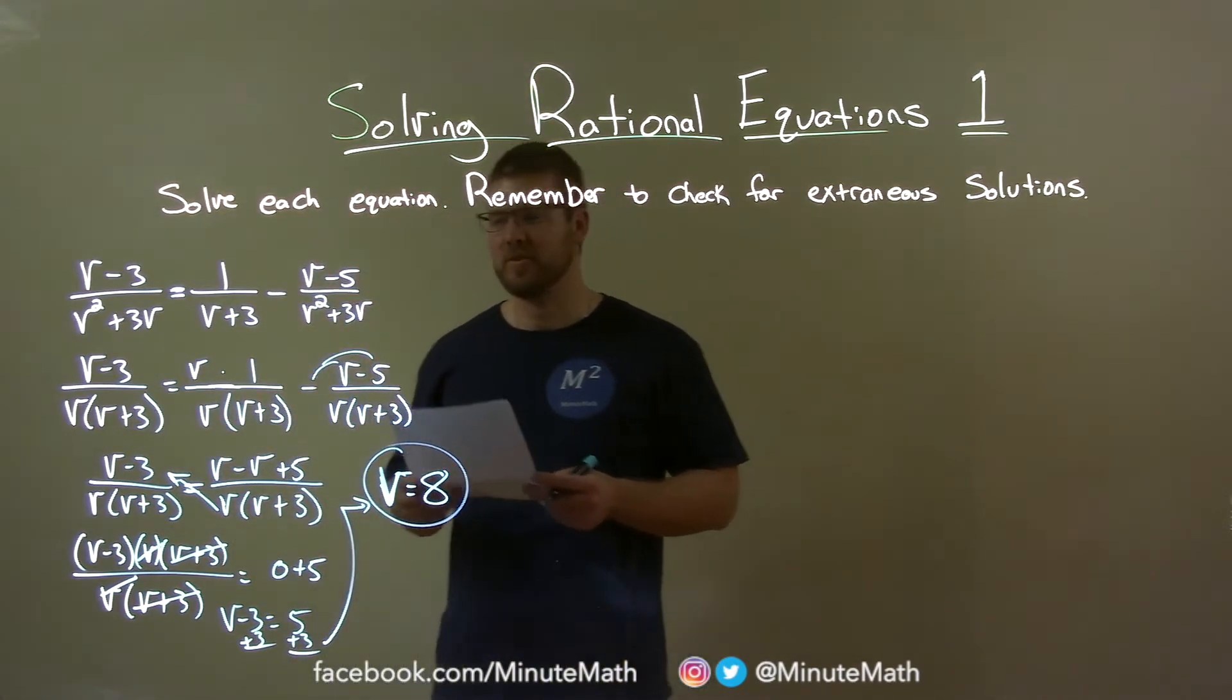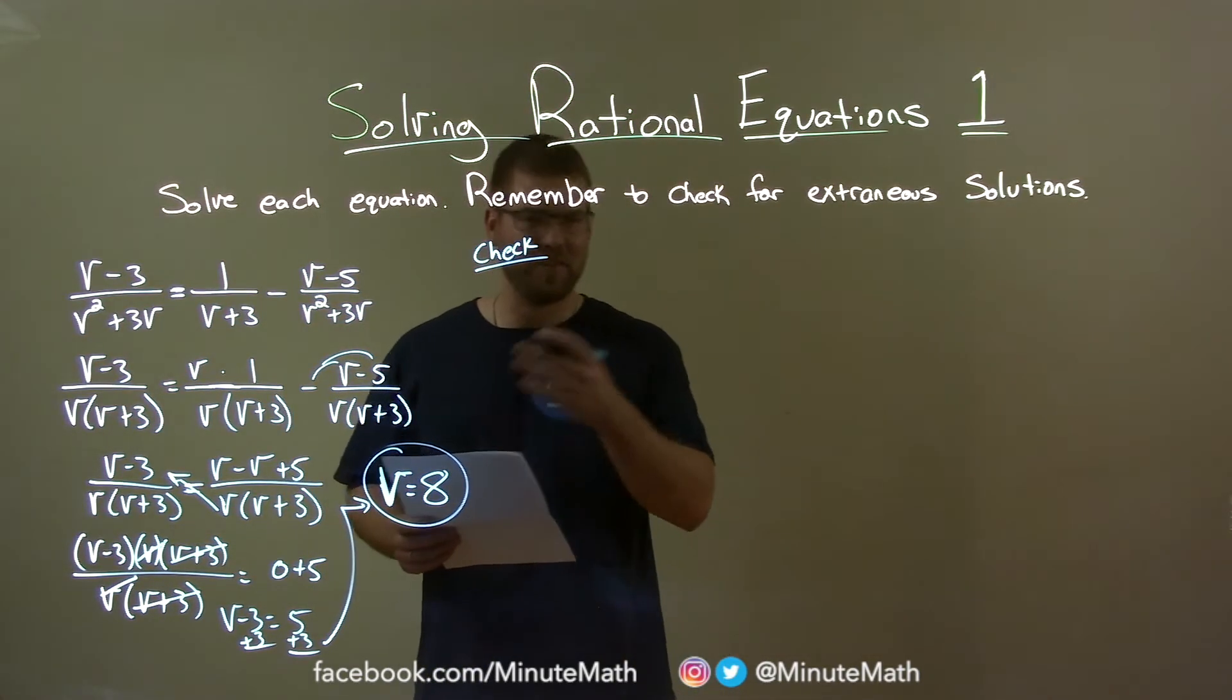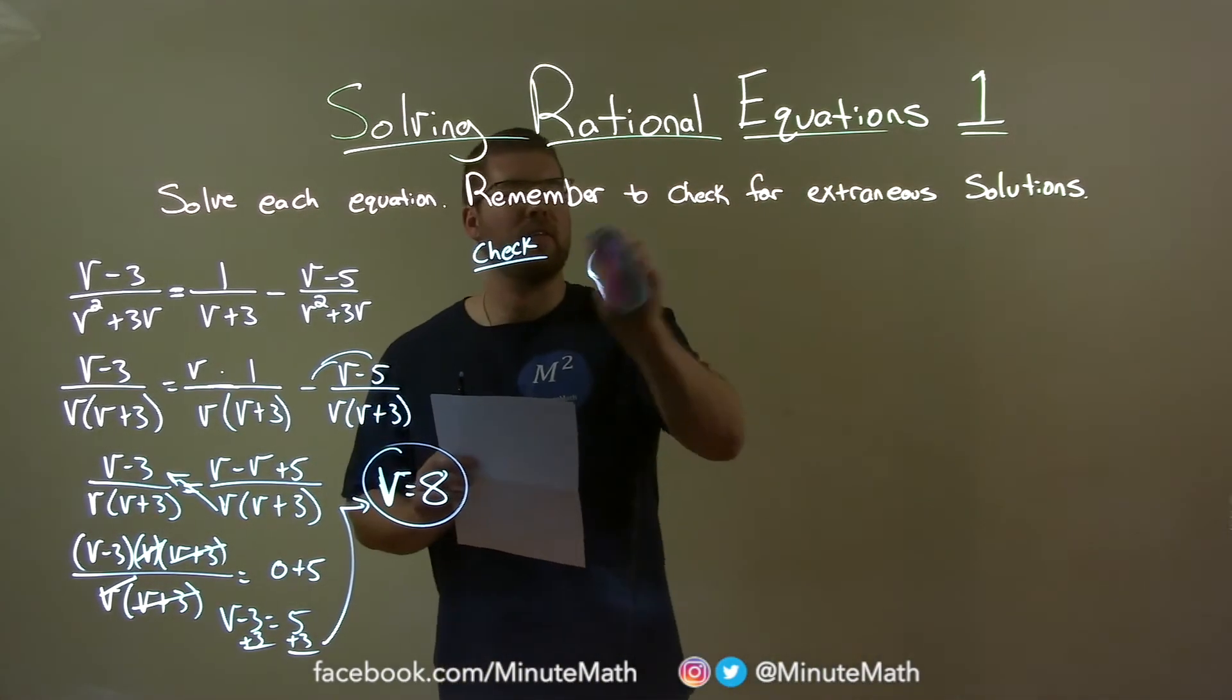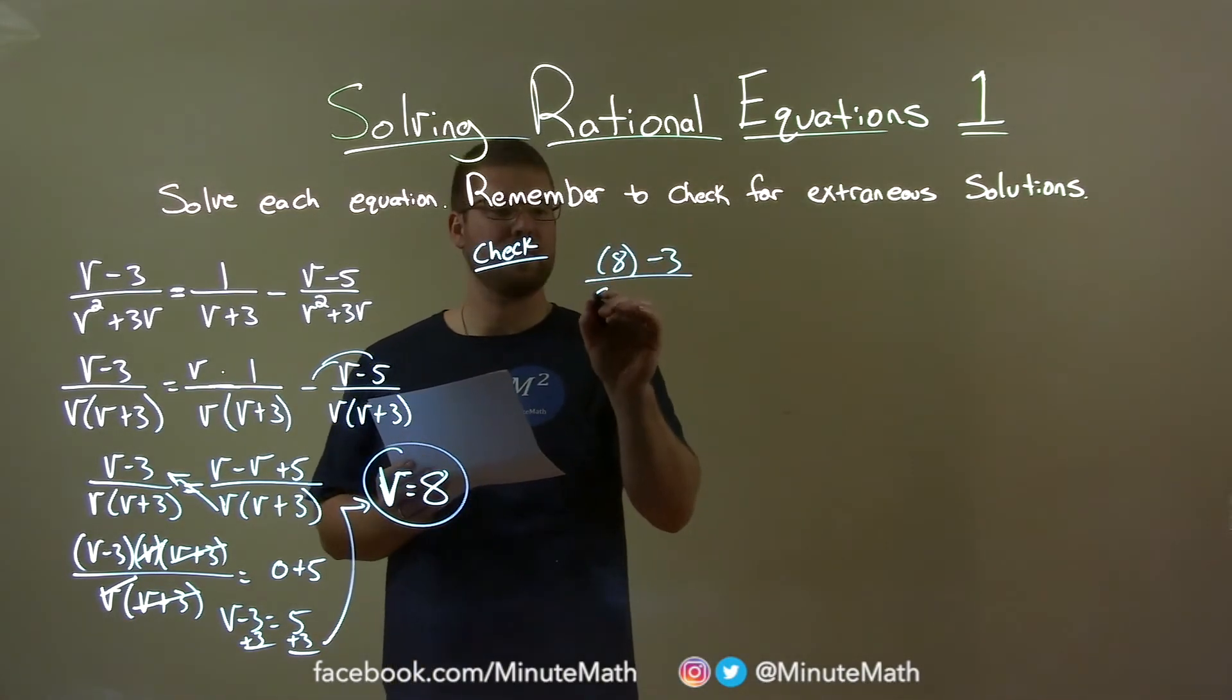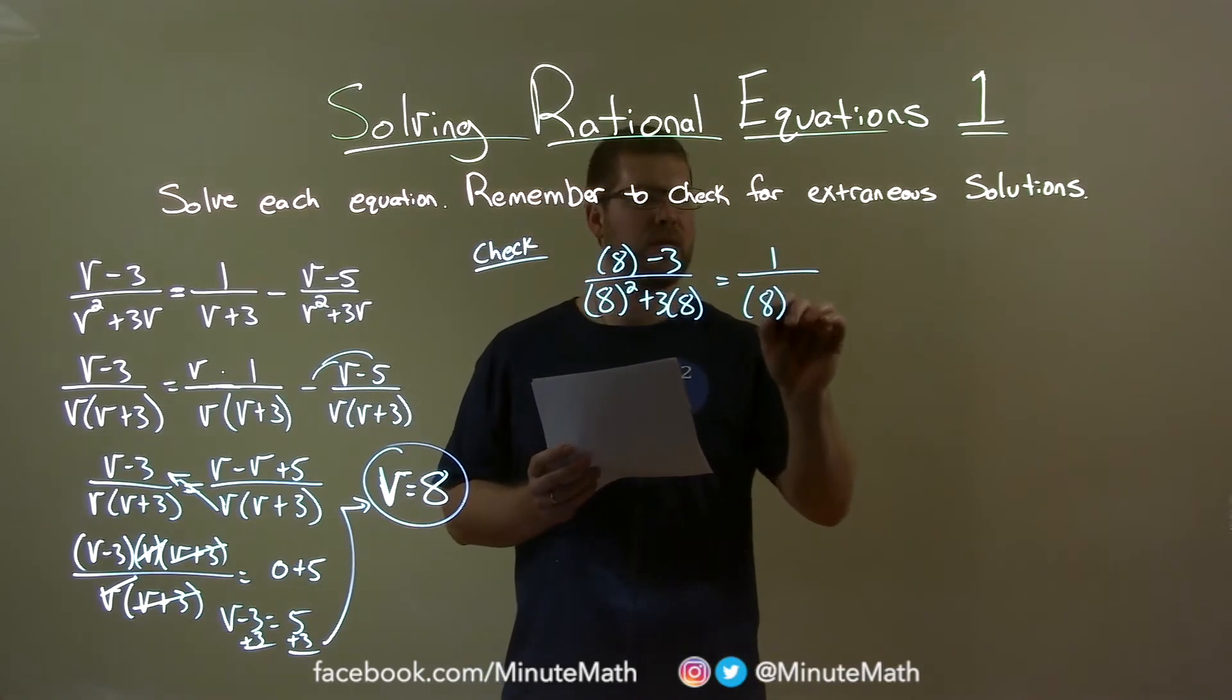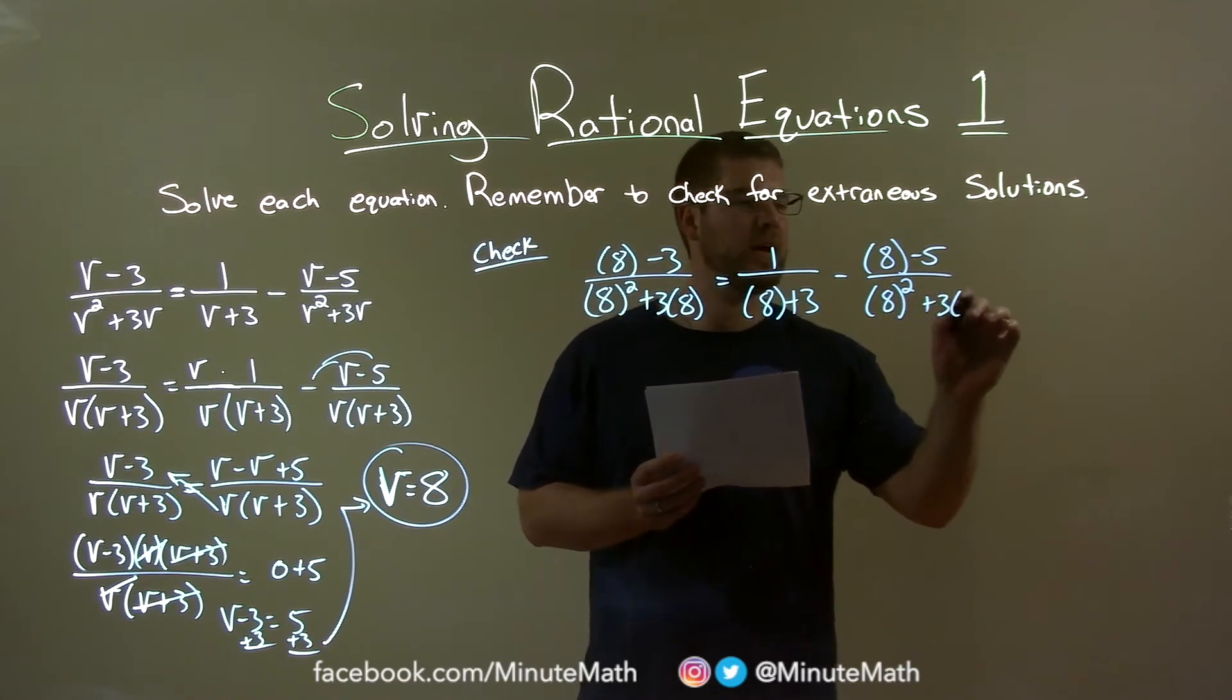But we have to check this, right? I told us to check for extraneous solutions. So let's check. Let's see if that actually was right. So what I'm going to do is rewrite my original equation, but put 8 in for every v, and luckily you won't have to see my v's anymore. So we have 8 minus 3. I'm just doing it like this. Put a parenthesis. I like to put parenthesis around everything that I substitute in. Make sure I bring it all. So we have 8 minus 3 over 8 squared plus 3 times 8 equals 1 over 8 plus 3 minus 8 minus 5 over 8 squared plus 3 times 8.